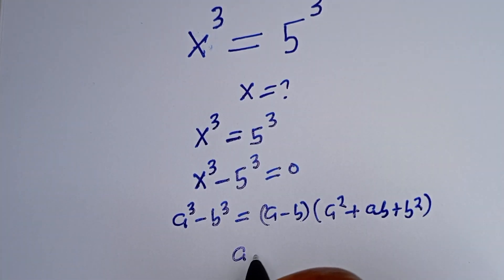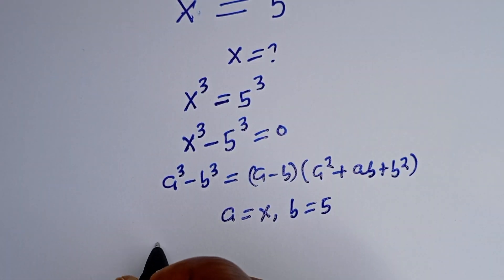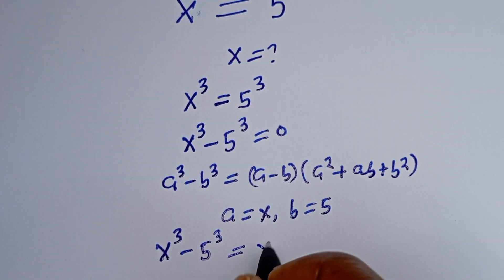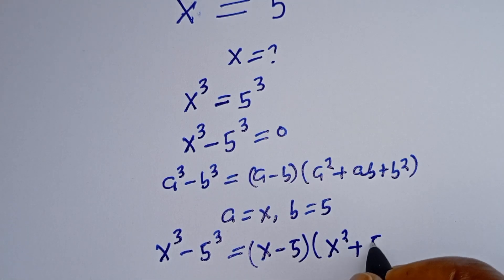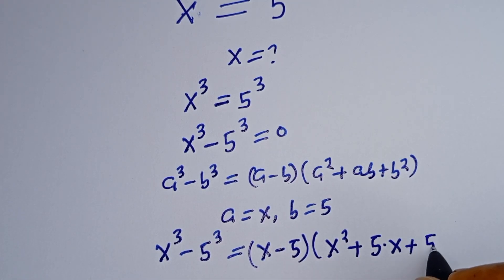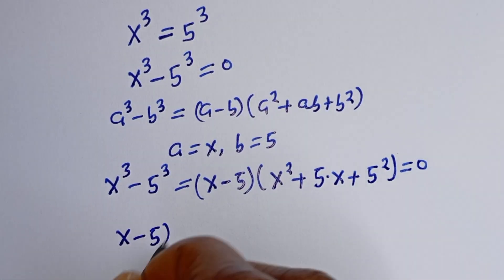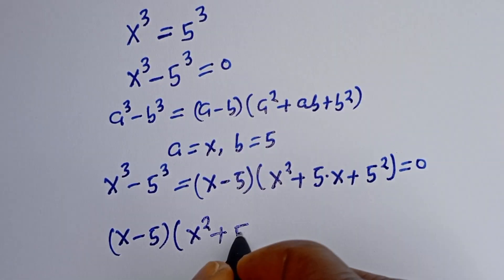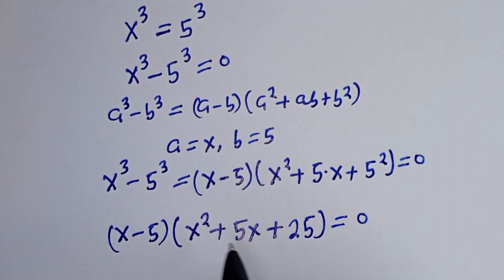From this equation, A is equal to S and B is equal to 5. Therefore, S raised to the power of 3 minus 5 raised to the power of 3 is equal to S minus 5, bracket S squared plus 5 multiplied by S plus 5 squared, which is 25, is equal to 0.